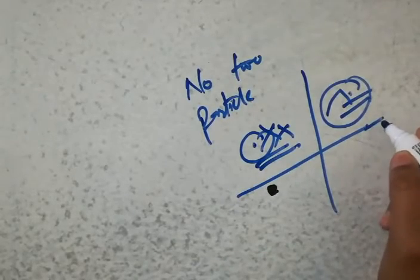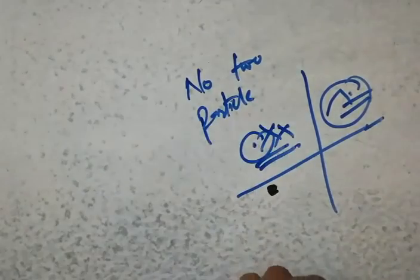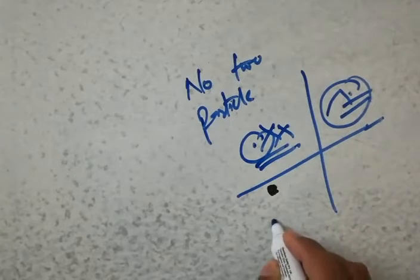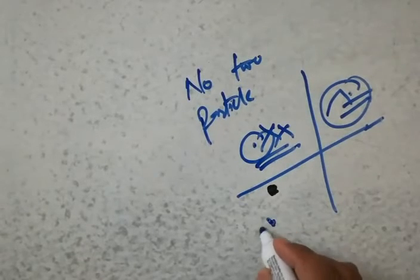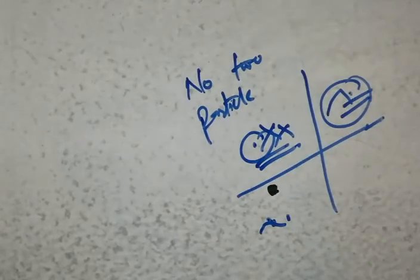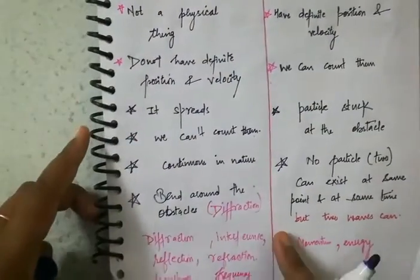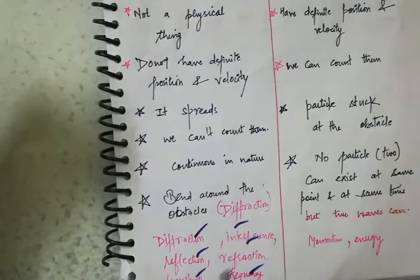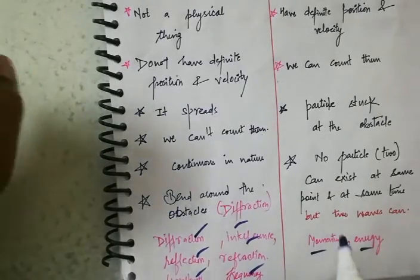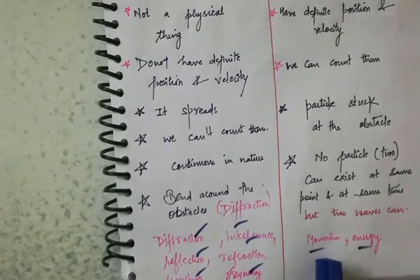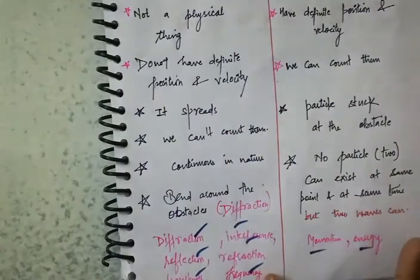This is the Young's double slit experiment, which shows that the electron has a wave nature. Wave properties include diffraction, interference, reflection, wavelength, and frequency. Particle properties include momentum and energy. So sometimes when I talk about electrons in EDC using momentum and energy, you should know I am talking about particle nature — meaning the electron is acting like a particle.